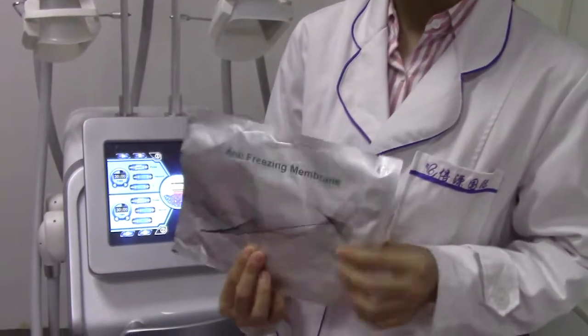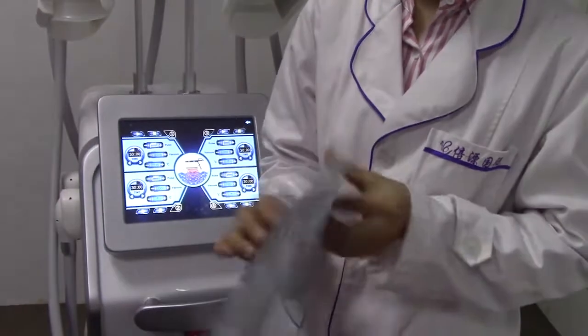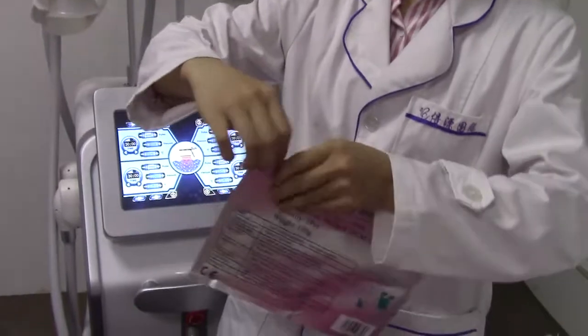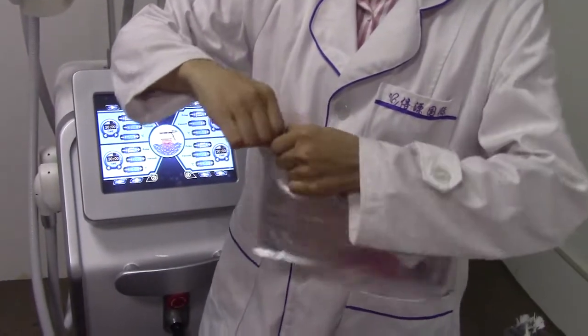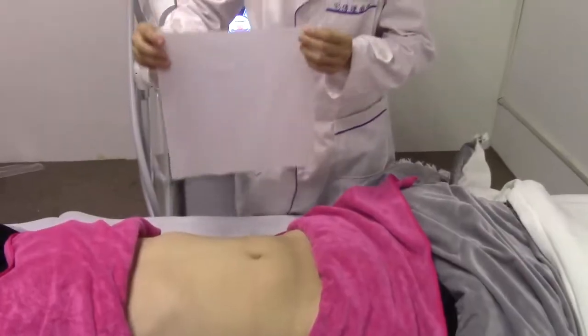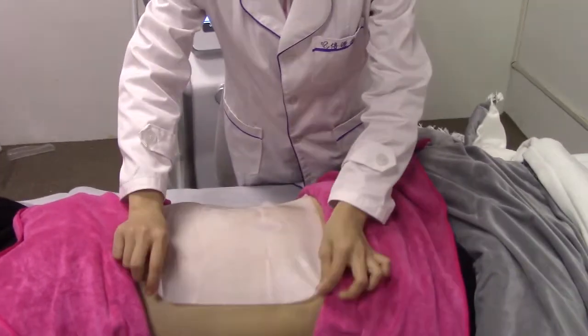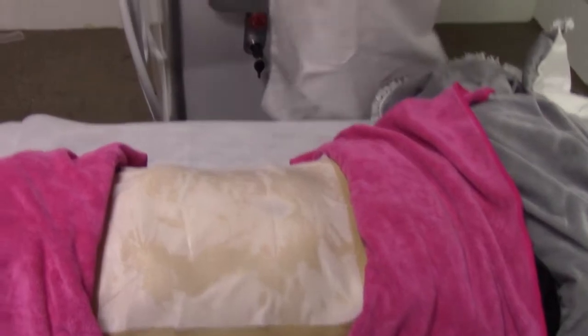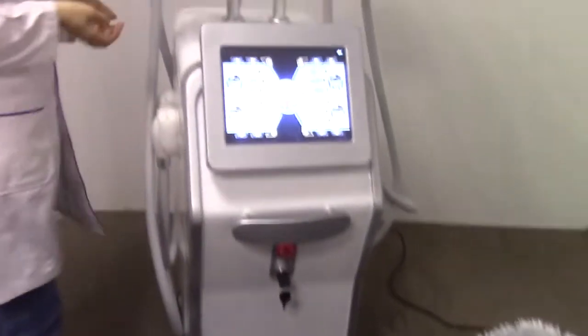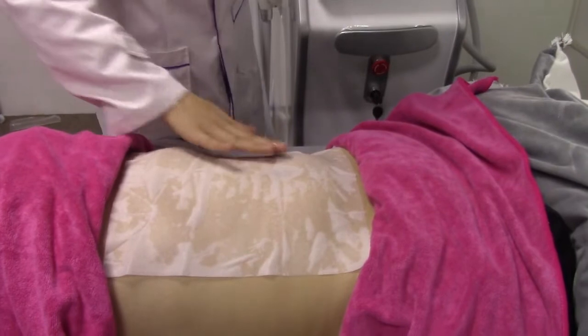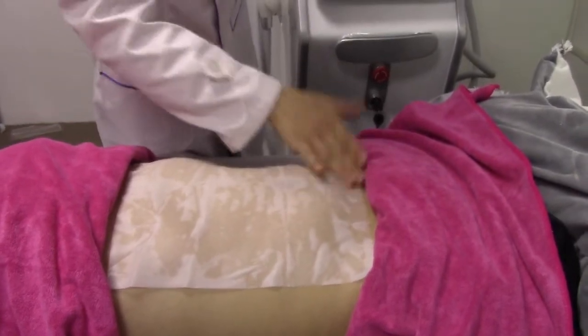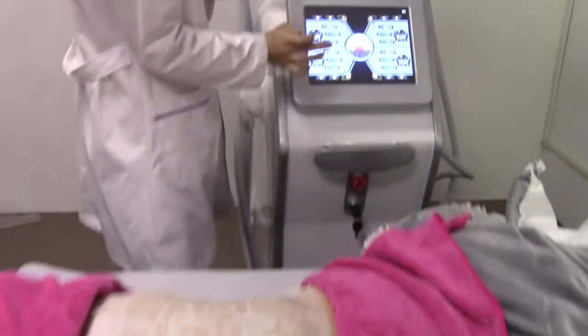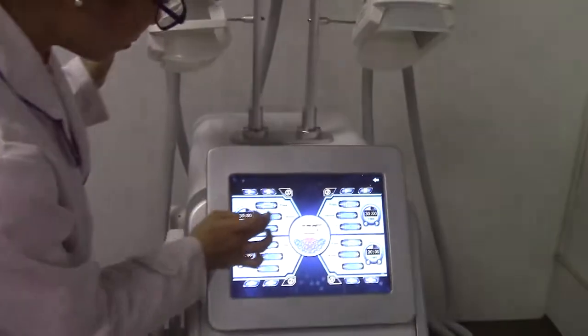Before we do the cryolipolysis treatment, you have to use this anti-freeze membrane. Put the anti-freeze membrane on the treatment part to make sure that the anti-freeze liquid touches the skin completely. Now we use the medium handle piece.